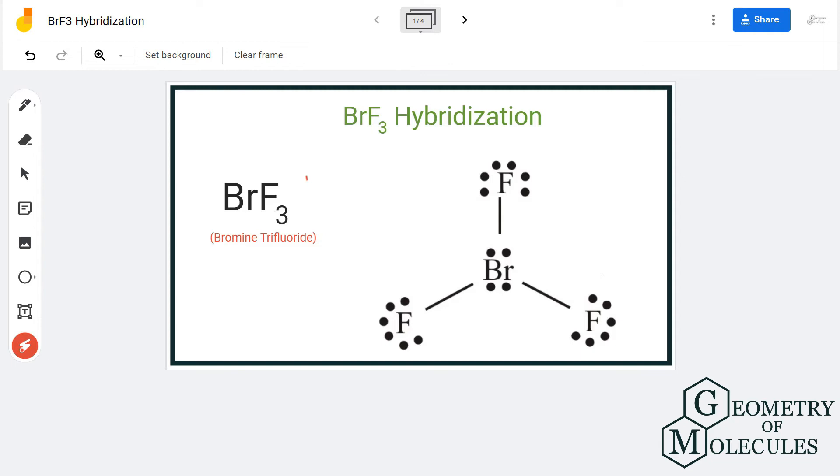Hi guys, in this video we are going to look at the hybridization for BrF3 molecule. It's the chemical formula for bromine trifluoride and it is made up of one bromine atom and three fluorine atoms. To determine its hybridization, we will first look at its Lewis structure and steric number.